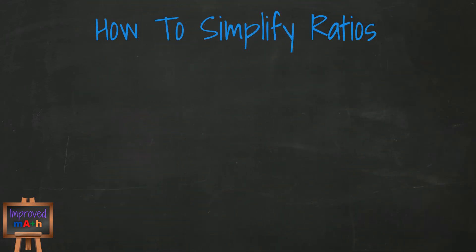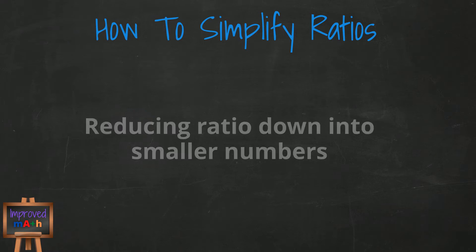Simplifying a ratio means reducing the ratio down to its smallest, simplest terms. Sometimes ratios can be big numbers and hard to work with, especially if you're going to start doing things like adding, subtracting, dividing, or multiplying ratios.